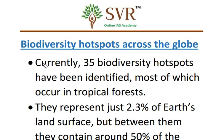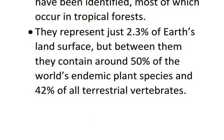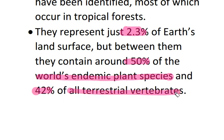Now let's discuss some facts about biodiversity hotspots across the globe. At present, 35 biodiversity hotspots have been identified in the world. Most of the biodiversity hotspots occur in tropical forests — each and every point is important for the prelims examination. Biodiversity hotspots represent just 2.3% of the earth's land surface, but they contain nearly 50% of the world's endemic plant species and 42% of all terrestrial vertebrates.